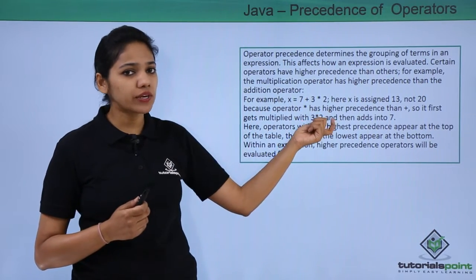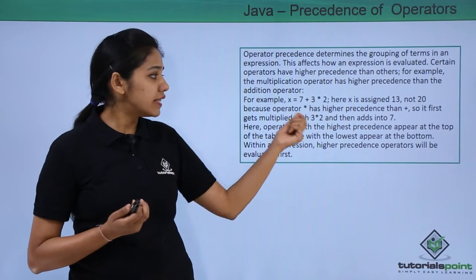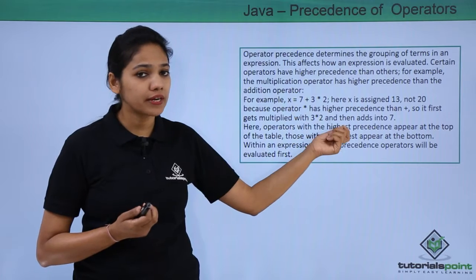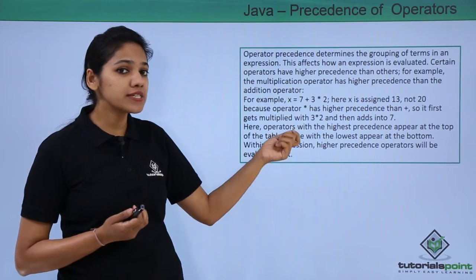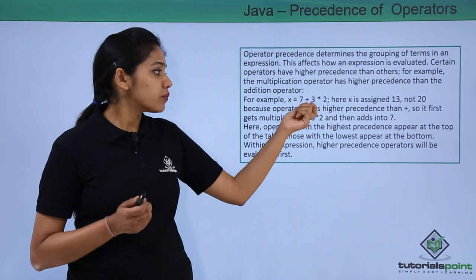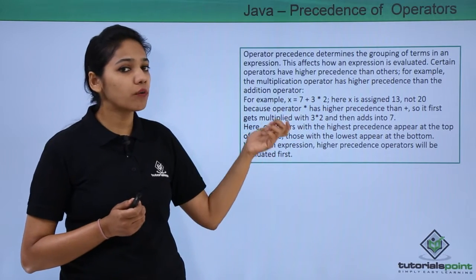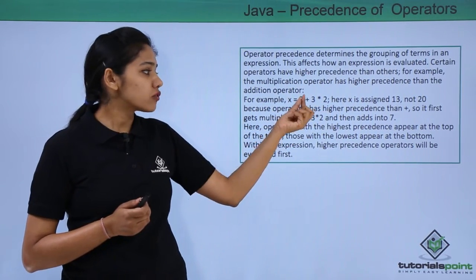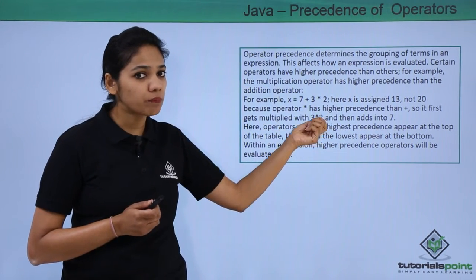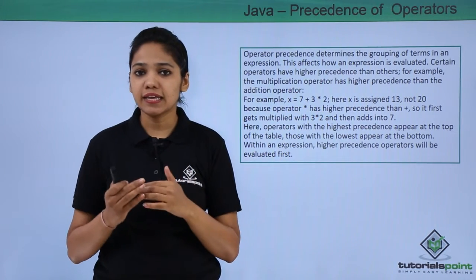For example, consider this equation. In this case, one operand is being shared by two operators, so we need to decide which operator should perform first and which later. The operators here are plus and multiplication, and the operands are the numbers. Three, being an operand, is shared by the plus and multiplication operators.